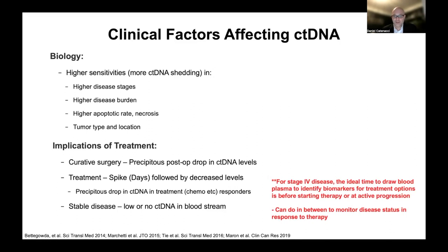For stage four disease, if the intention of your blood draw circulating tumor DNA next-generation sequencing test is to identify genetic events to target based on therapies, the ideal time to draw blood would be before you start any therapy or at the time any given therapy stops working — that's the opportune time when there's more circulating tumor DNA in the blood. On the other hand, you can draw in between — like when there's stable disease — to monitor disease status and check whether therapy seems to be working.